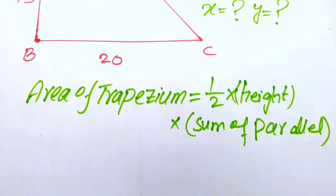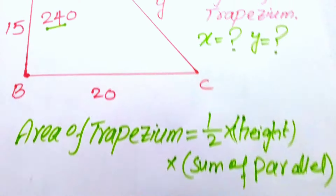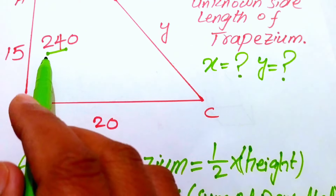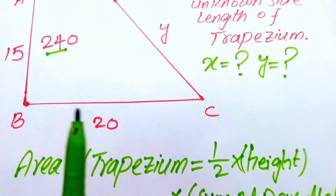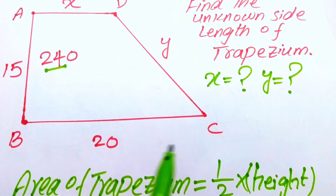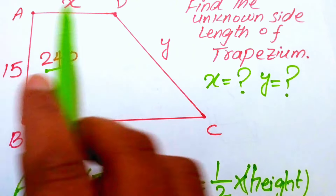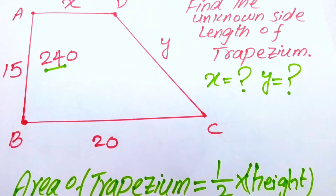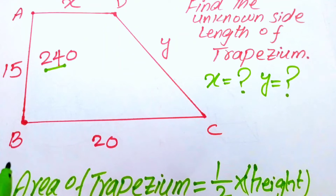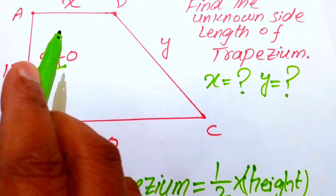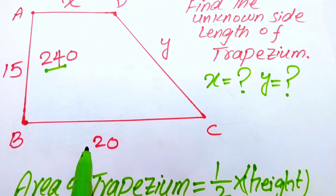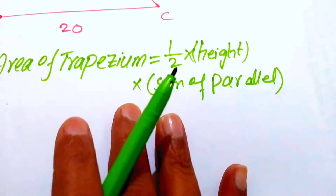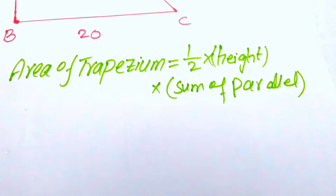Looking at the diagram, the area of the trapezoid is 240 meters. The parallel sides are AD and BC, so the sum of the parallel sides is x plus 20 meters. We will now put these values into the formula and move toward our final answer.